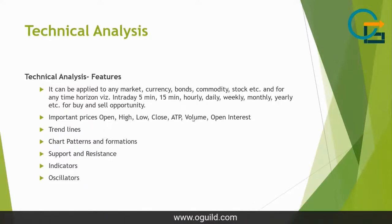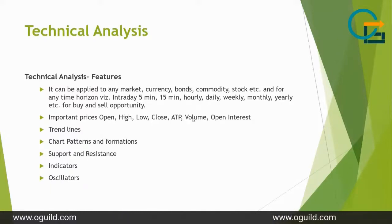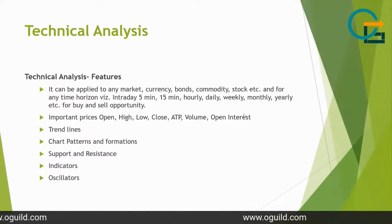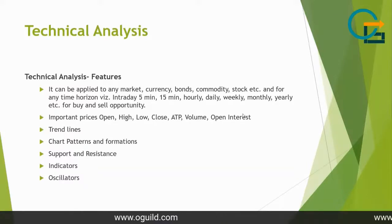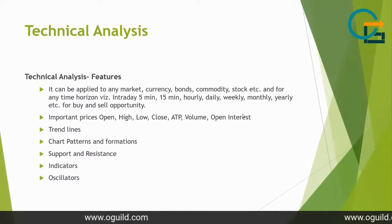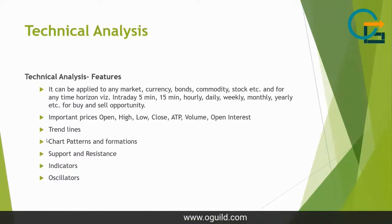Then we have volume — in the case of stocks, that's the number of transactions, both buy and sell included. And then the last one is open interest. Open interest is specific to derivatives, meaning the futures and options market. It tells you the open position for a contract at that particular time. This helps traders to identify what will be the possible support or resistance level for an option contract.